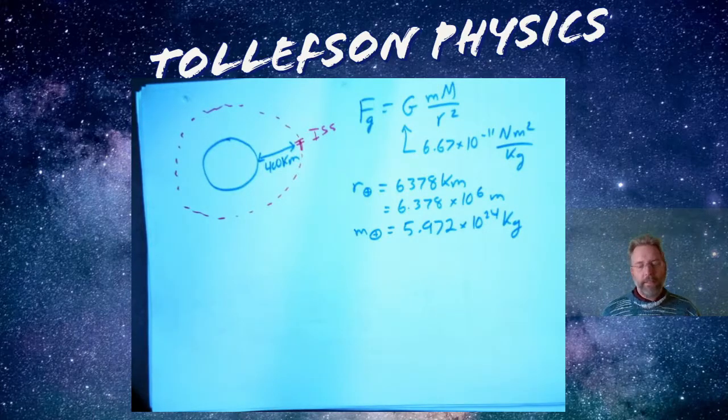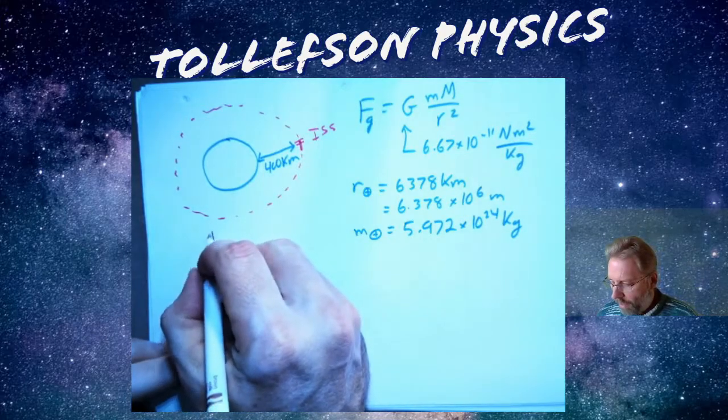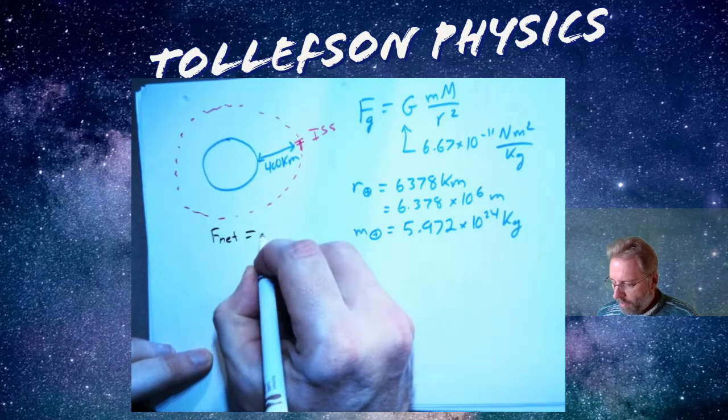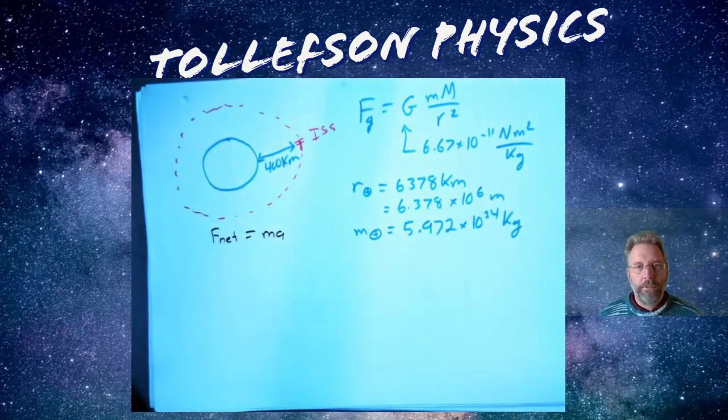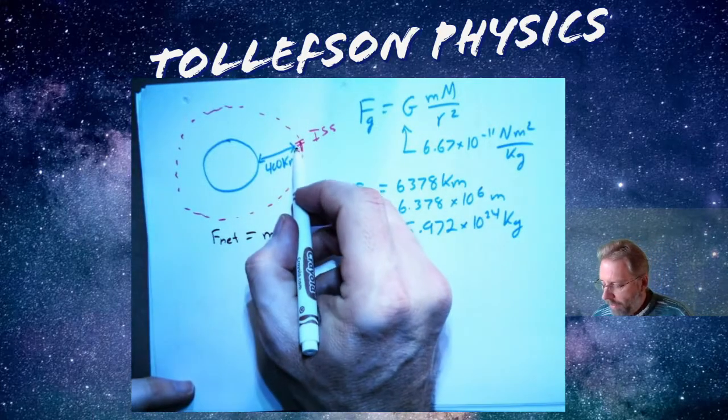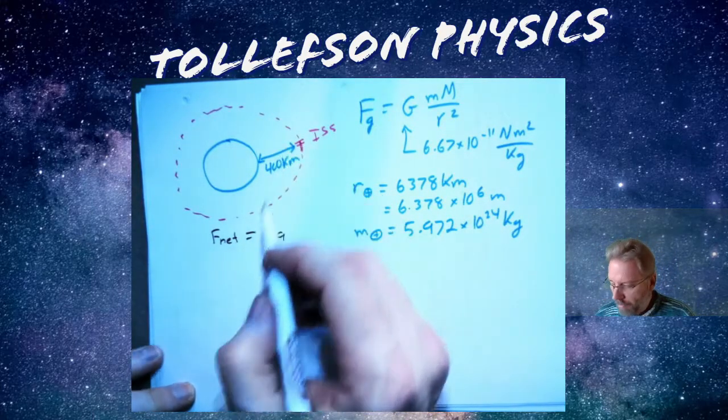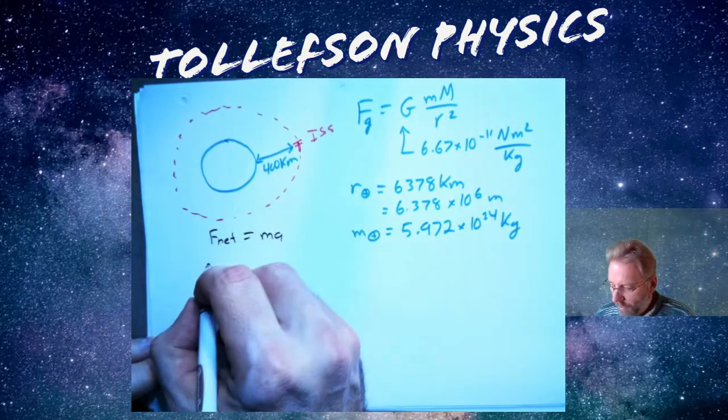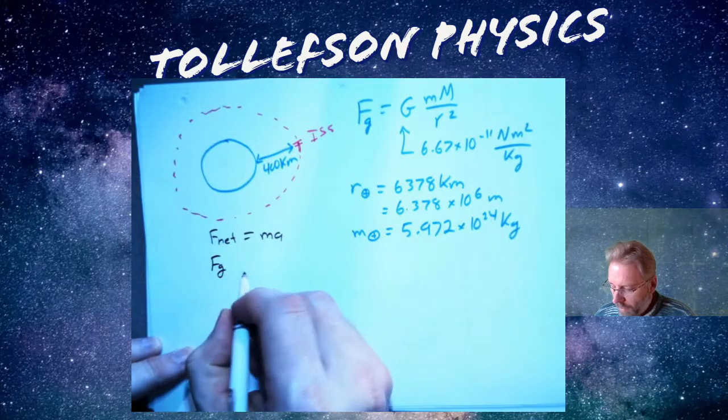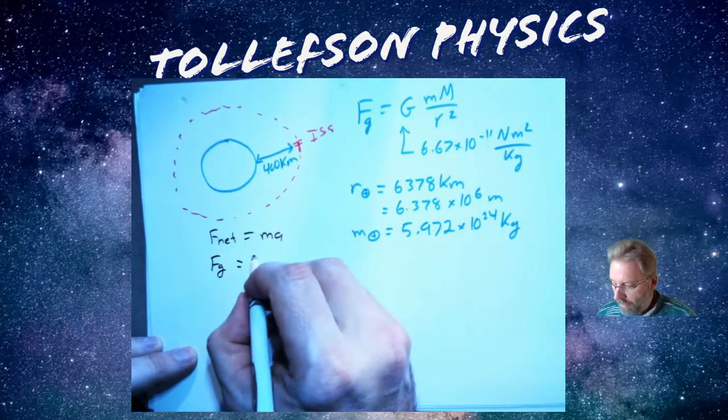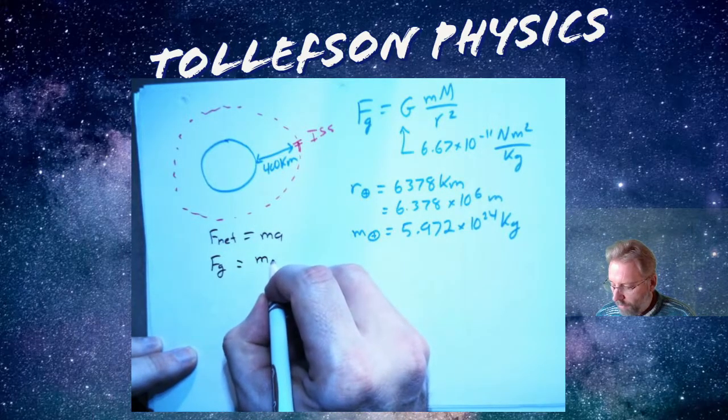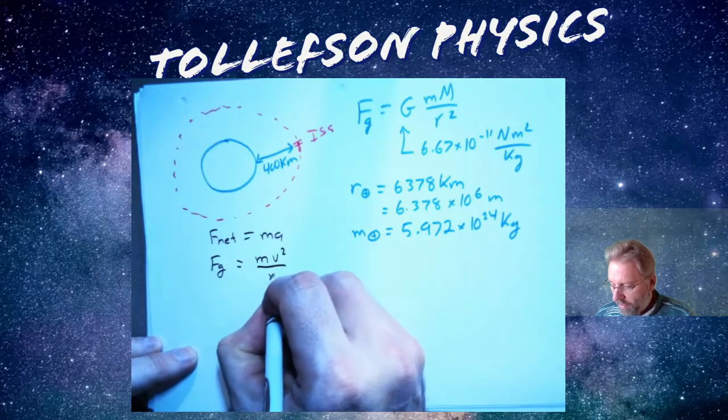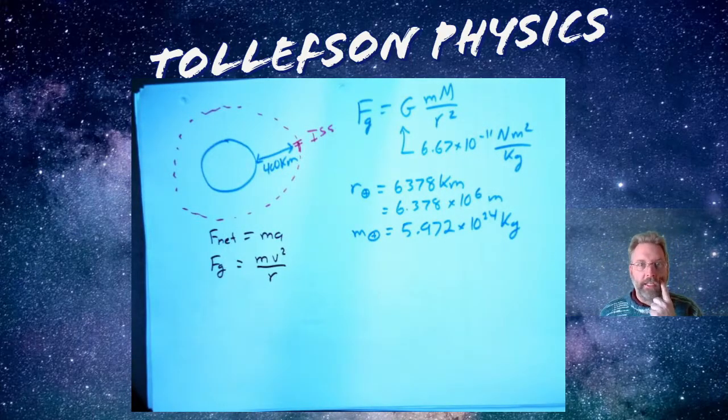We're basically going to start with Newton's second law. Newton's second law states that the net force equals the mass times the acceleration. What is the net force on this object? It's the force due to gravity. Force due to gravity is going in this particular case in a circle, so I can substitute v squared over r as the acceleration. So I get an expression that looks like this.